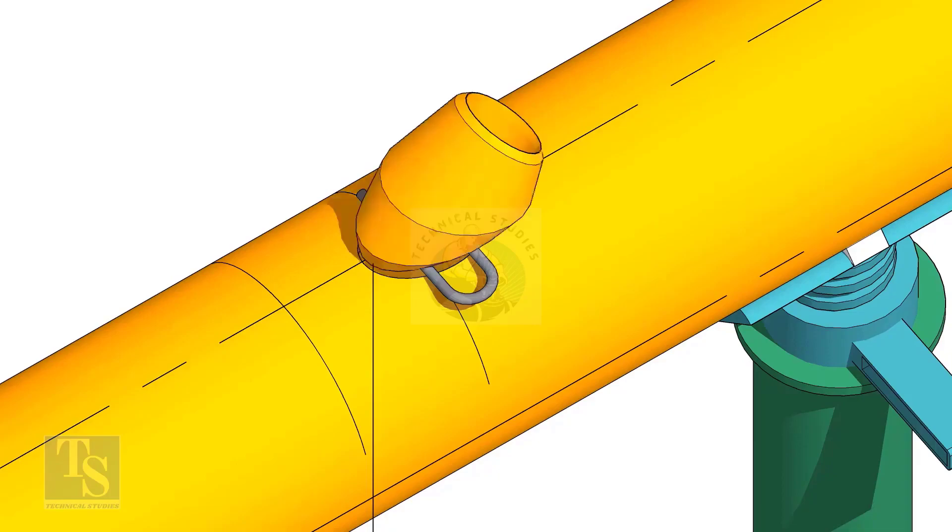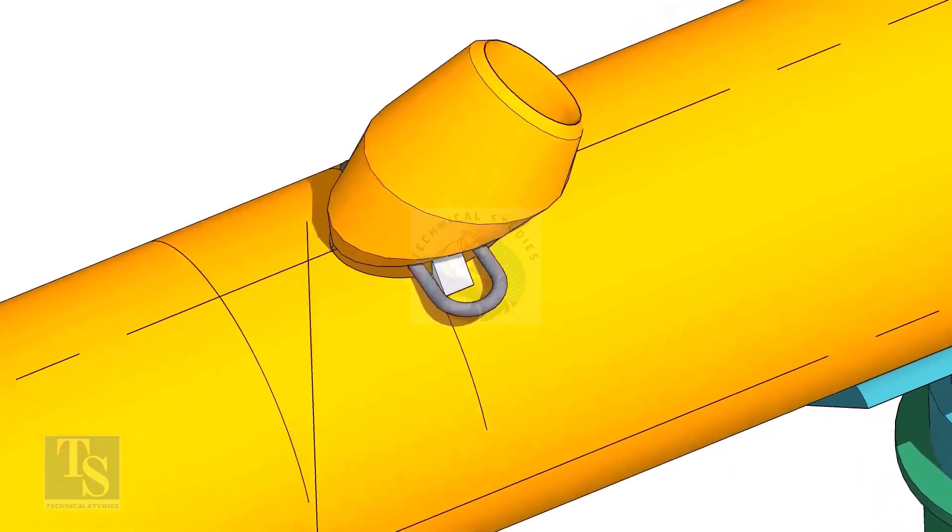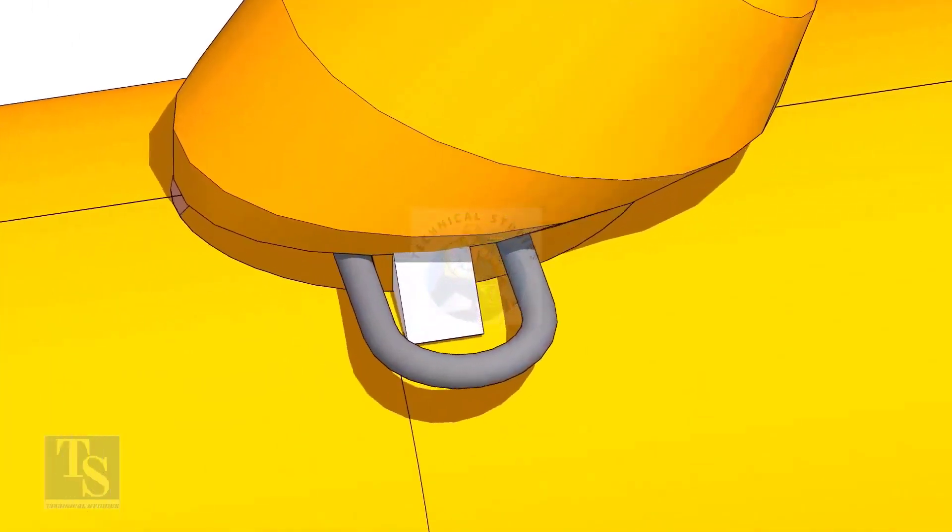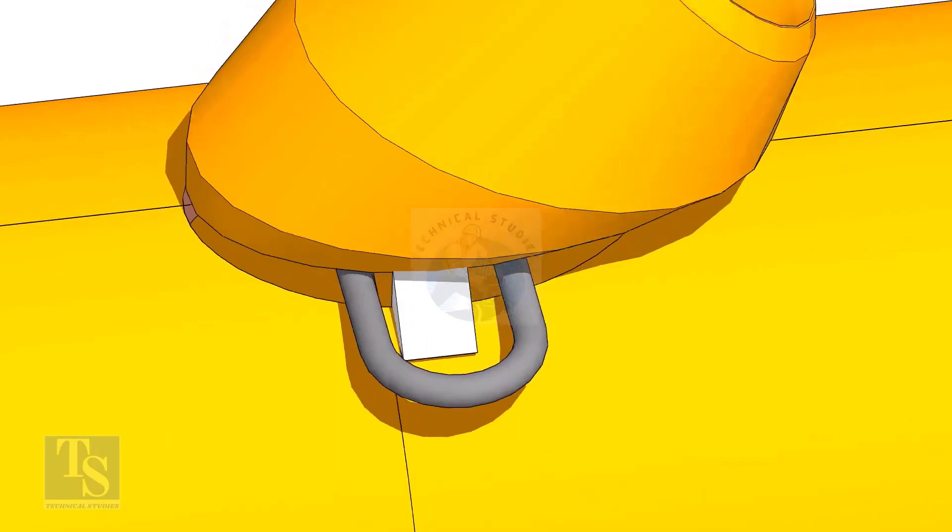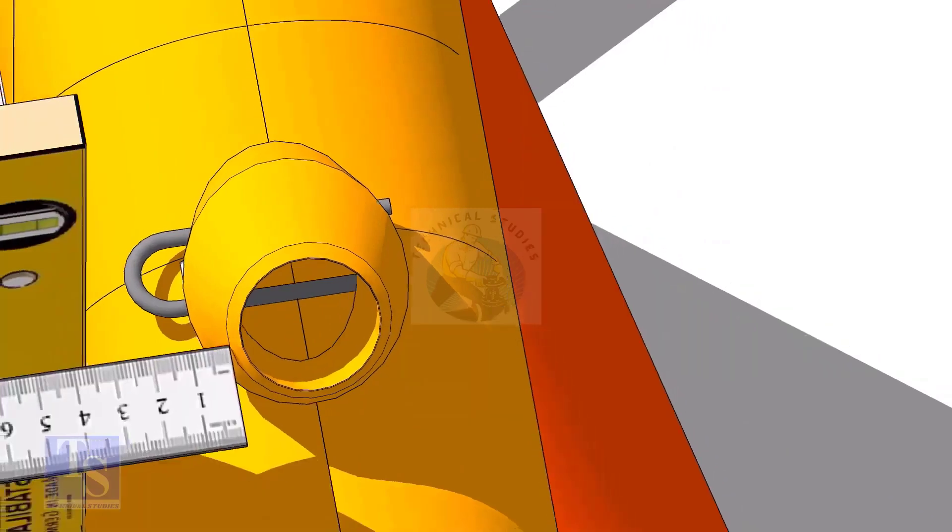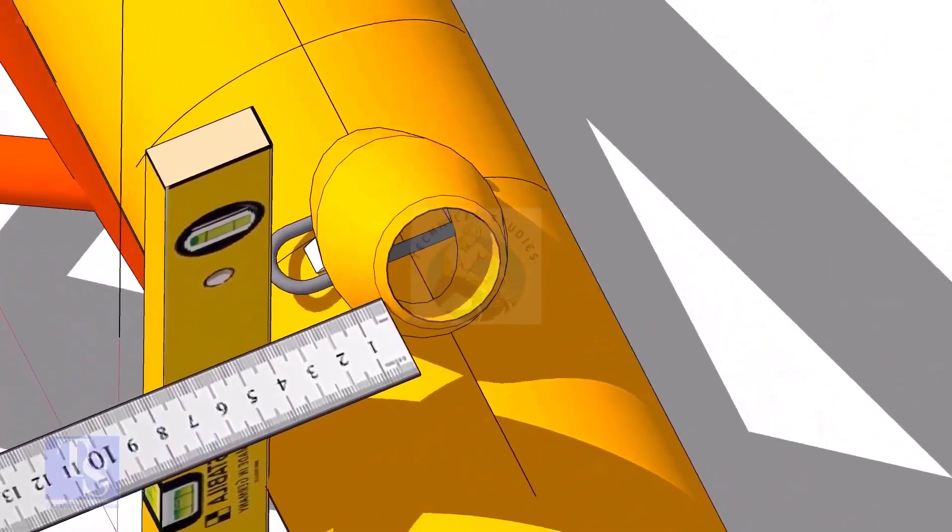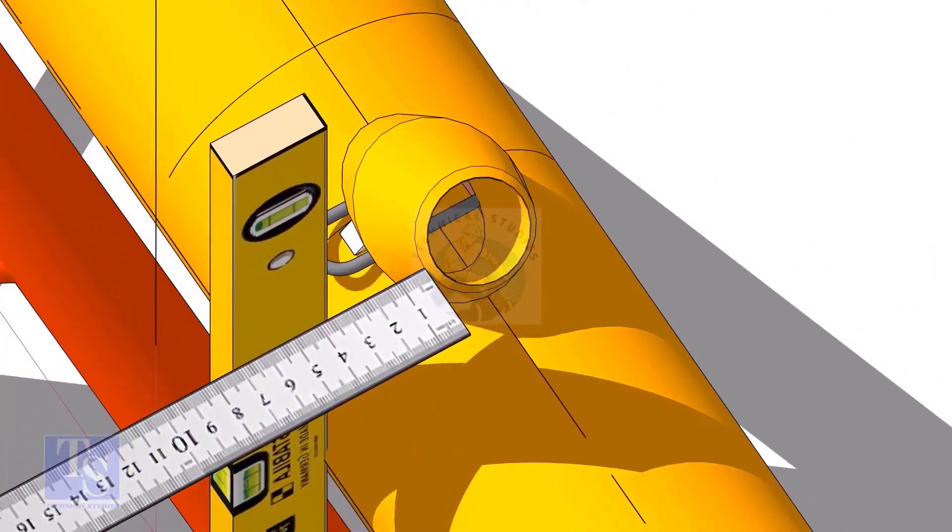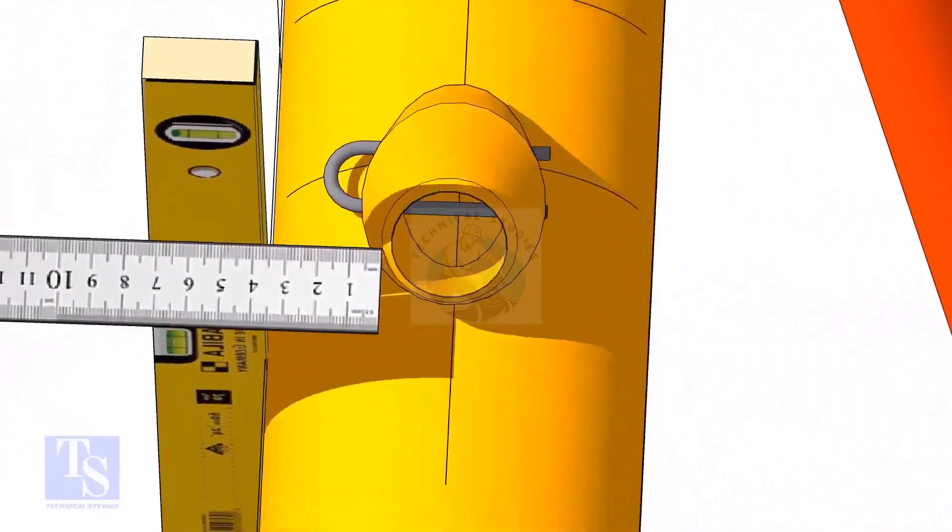Put the lateralet on the center of the hole. Tack weld on one side. Equal the distance from both sides of the lateralet. Tack weld on the other side.